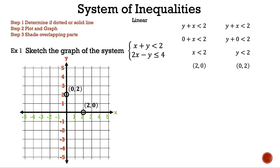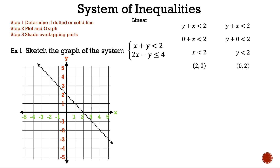Now, let's graph our second point and draw our line. Why do we think we have a dotted line? That is correct — we only have less than. The inequality x plus y is less than 2 does not have or equal to. Remember, we either shade to the left or to the right. If we don't remember the patterns for that, we can always pick two points, one on each side of the line, and shade where it is true. This time, we pick the points (0, 0) and (2, 2).